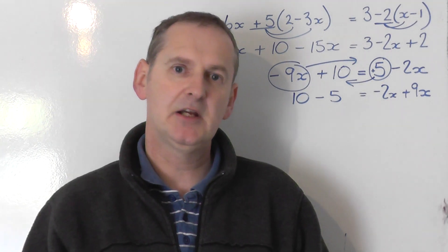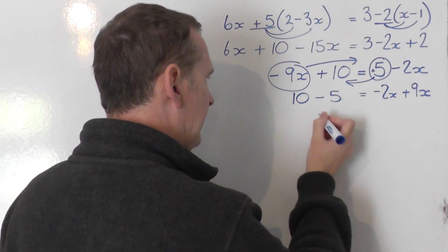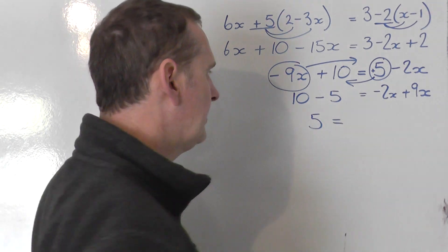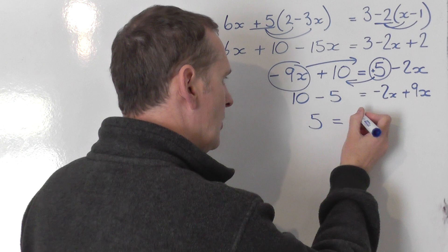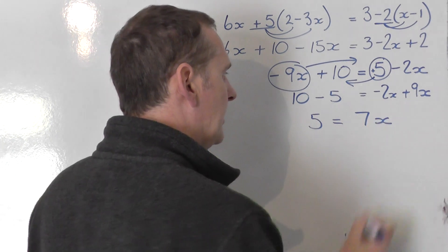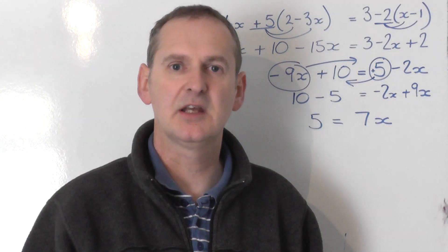Let's tidy up on both sides. 10 take away 5 on the left, that's 5. And then we've got minus 2x plus 9x. The pluses win, so you get 7x on the right hand side.